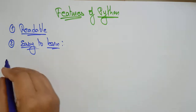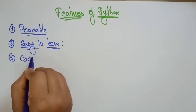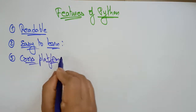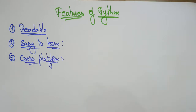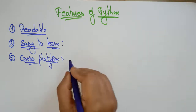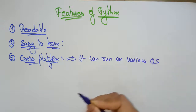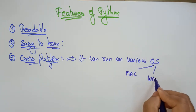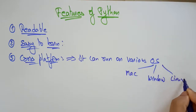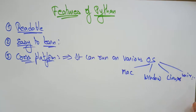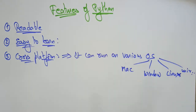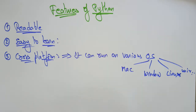The next feature is cross platform. This is one of the most important features of Python. We call Python a cross platform language because it can run on various operating systems — such as Mac, Windows, Linux, and Unix. This makes it a cross platform language.